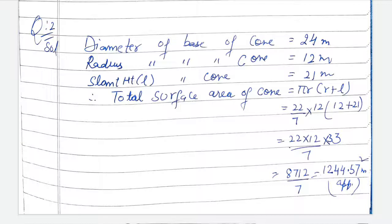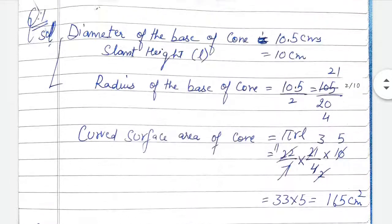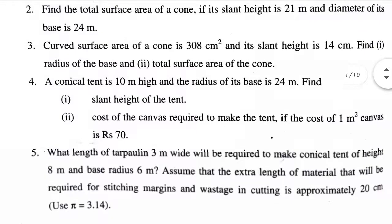When 8712 is divided by 7, it is non-terminating — non-terminating because factors 2 or 5 are not present. When solved, this is approximately 1244.57, which is not a whole number. Now come to question number 3.